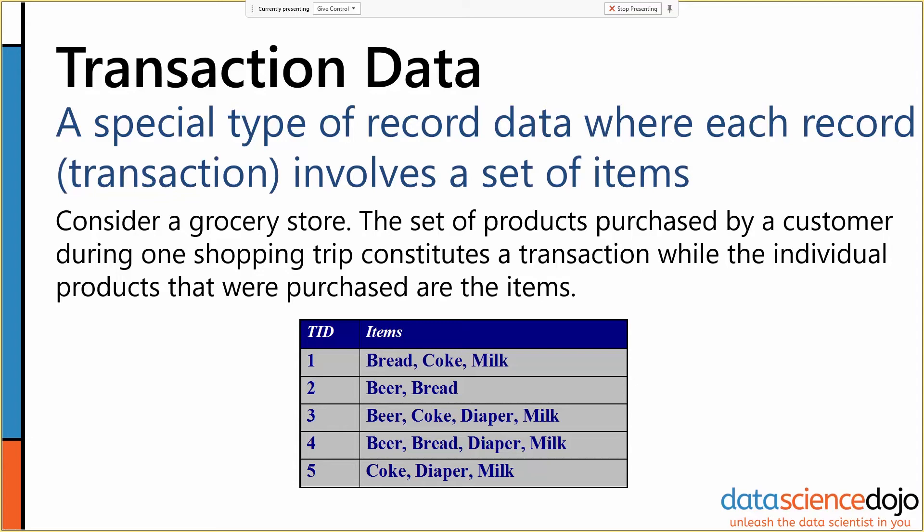If we're at a grocery store, the set of products purchased by a customer during one shopping trip constitutes a transaction, and the individual products that were purchased are the items.